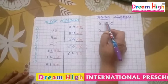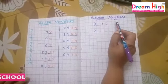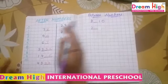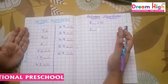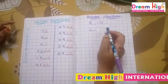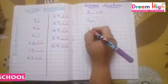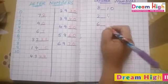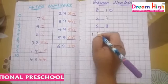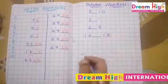Now after completing numbers, we will start 'between numbers.' We have taken between numbers because this is a similar exercise. The problems are: 8 dash 10, next is 2 dash 4, next is 6 dash 8, next is 16 dash 18.